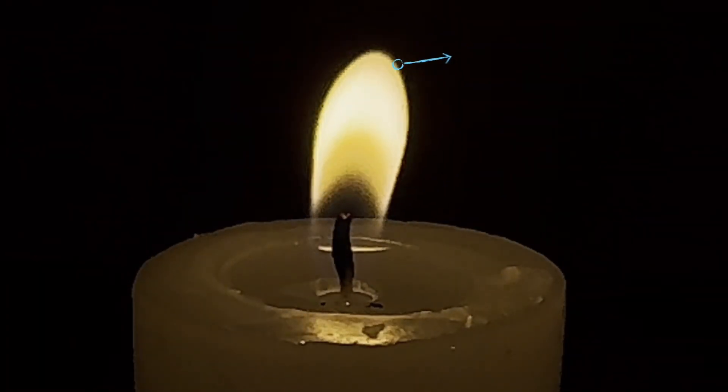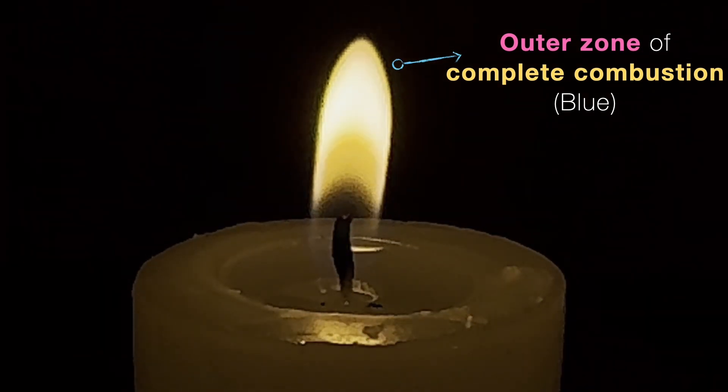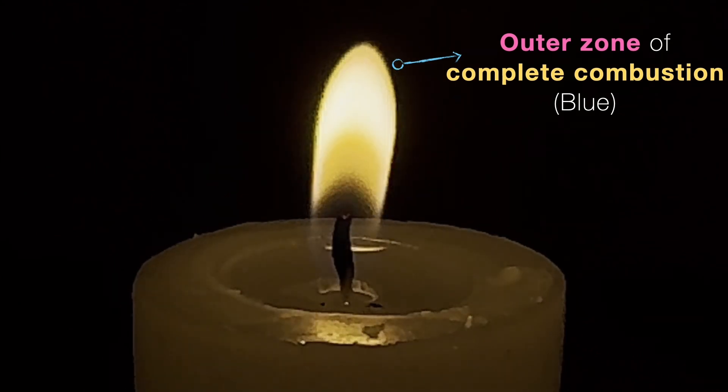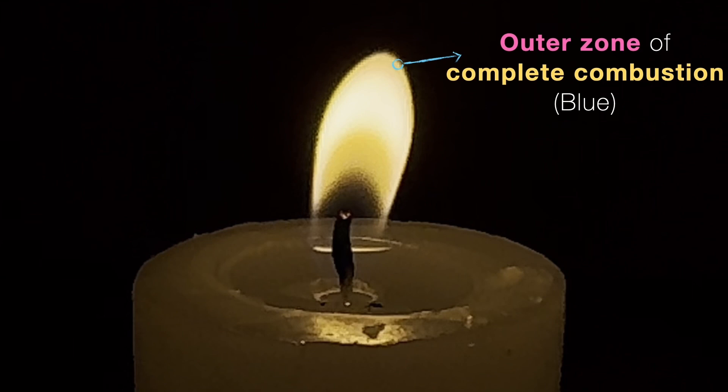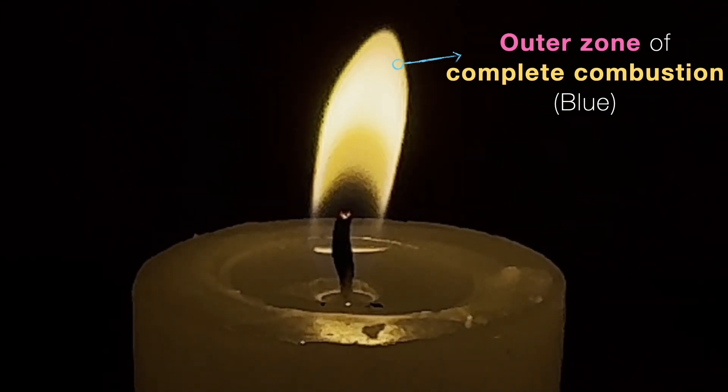Let's start with the outer zone of the flame. It's blue, though it's hard to see clearly there. This is called the non-luminous zone where complete combustion of the wax happens. Why? Because there is plenty of oxygen here. This part is really exposed to the whole atmosphere where there is plenty of oxygen. This is the hottest part of the flame because complete combustion is taking place here.